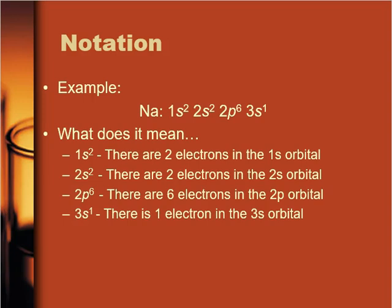So once upon a time you will have learnt that the electron configuration of sodium is 2, 8, 1 — two electrons in the first orbital, eight electrons in the second orbital, one electron in the third orbital. What we're going to look at right now is the updated electron configuration for sodium, and if you look closely, you can see that there are some similarities.